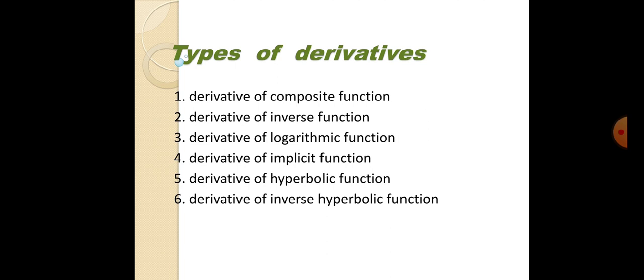In the next point, we know about the types of derivatives. There are six types of derivatives: first, derivative of composite function; second, derivative of inverse function; third, derivative of logarithmic function; fourth, derivative of implicit function; fifth, derivative of hyperbolic function; sixth, derivative of inverse hyperbolic function. The first four types we studied in 12th class, and the remaining two types we study in this year, that is BSc Part I.